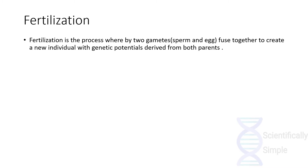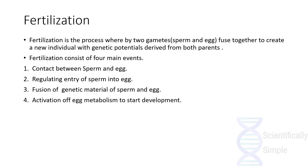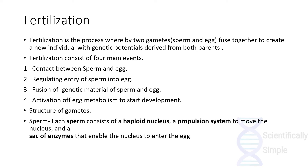Let's talk about fertilization. Fertilization is a process by which two gametes — the sperm and the egg — fuse together to create a new individual with genetic potential from both parents. There are four main events in fertilization: contact between sperm and egg, regulating entry of sperm into the egg, fusion of the genetic material of the sperm and egg, and activation of egg metabolism to start development.